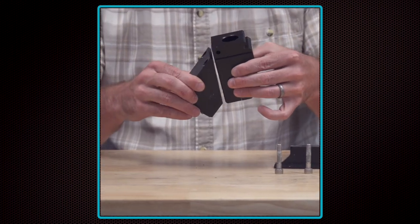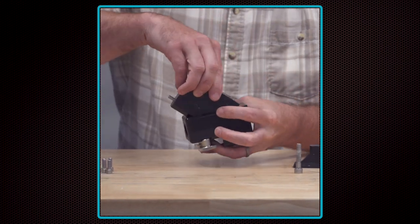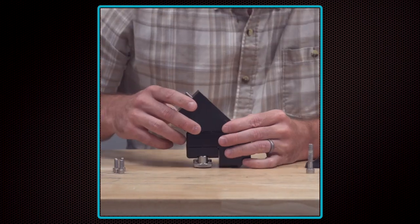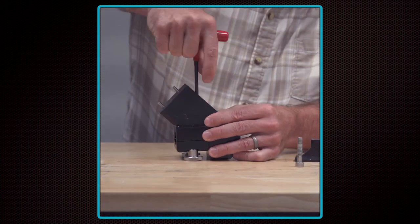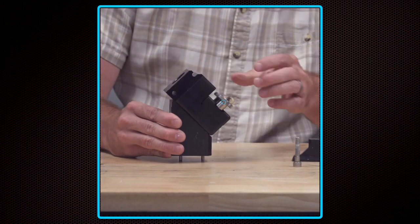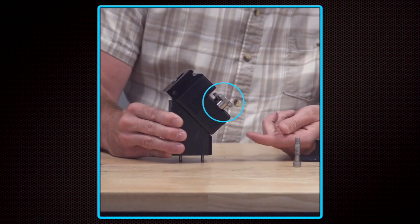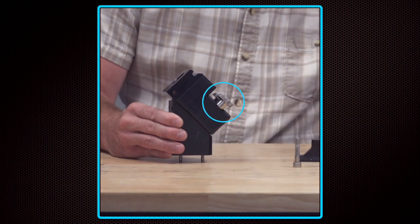Now replace the rail with the angle block and attach it with the 4 screws provided. Make sure the short side of the angle block is facing the thumb screws on the guide block.